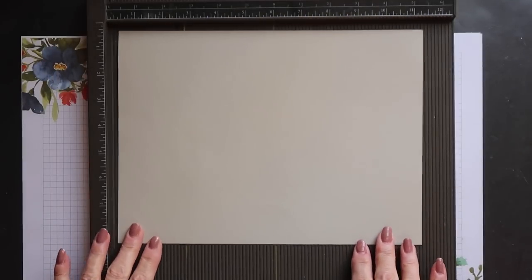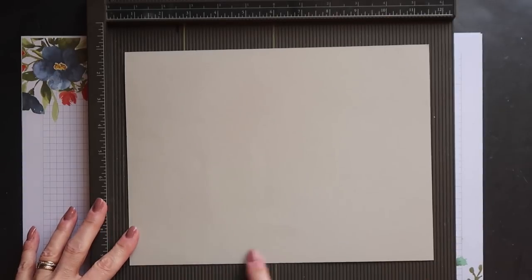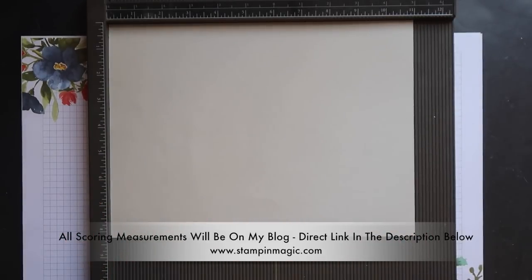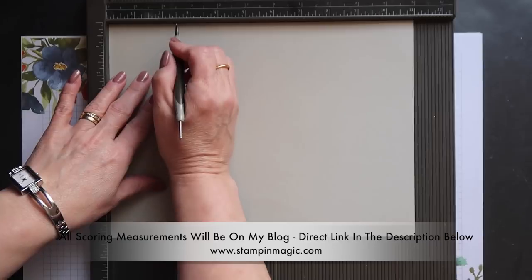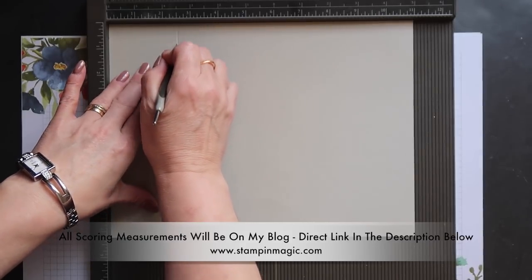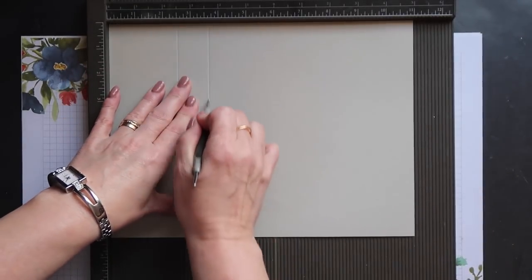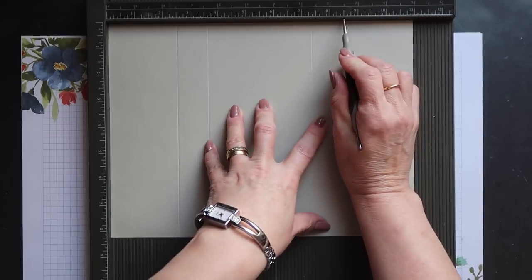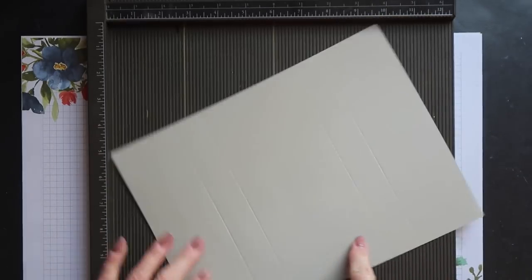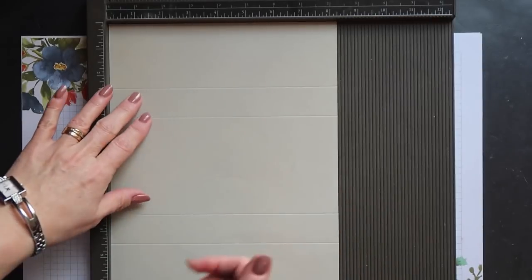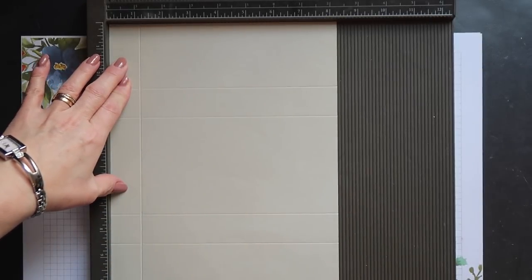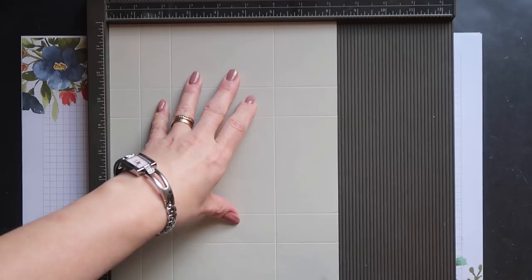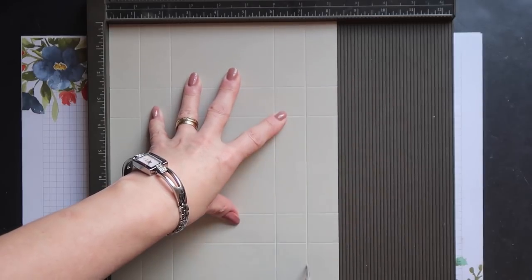I have a piece of Sahara Sand card that measures 11 inches by 8 1/4 inches. I'm going to place this into my Simply Scored board so the longest side is at the top, and I'm going to score down at 2 1/2 inches, 3 5/8 of an inch, 7 3/8, and 8 1/2 inches. Then I'll turn my cardstock and score down at 1 1/8 of an inch, 2 1/4 inches, 6 inches, and 7 1/8 of an inch.